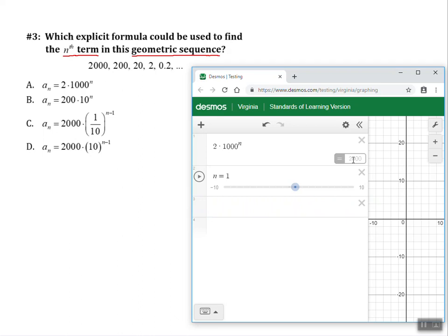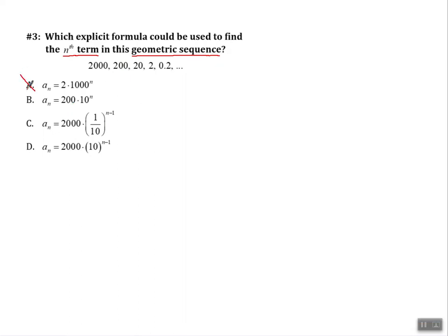When n is 1, I have my first term, which is 2000, which is what I'm supposed to have. But my second term, when n is 2, is not supposed to be this big. It's actually supposed to be getting tinier to 200. So I know that this is not the correct answer. I'm going to go back to when n is 1, and I'm going to change this to answer choice... Well, first of all, answer choice A is not correct. So of course, let's cross that out.